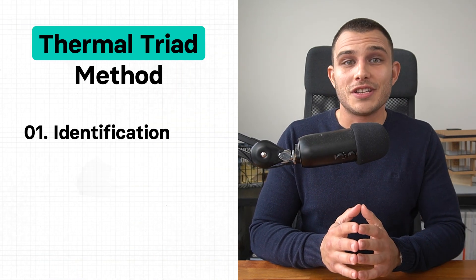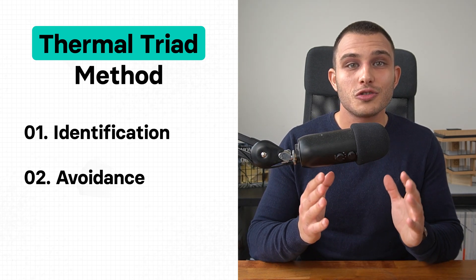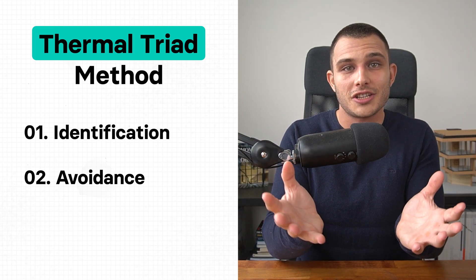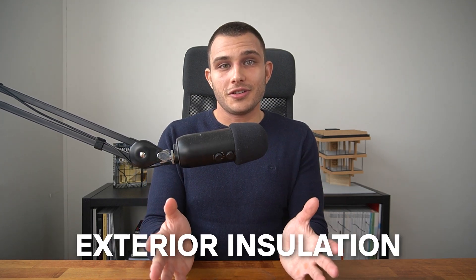The second design principle of the thermal triad method is avoidance. You should avoid any thermal bridges, and there should be a single continuous insulation layer all around the thermal envelope of the building. All insulation layers of the walls, the roof, and the floor should be connected with each other. The easiest way to avoid the majority of thermal bridges is by using exterior insulation, which solves a lot of problems. In any case, we should avoid penetrating the insulation. However, it's not always possible — in some cases we'll have to penetrate the insulation layer.